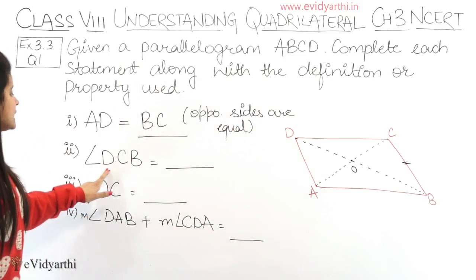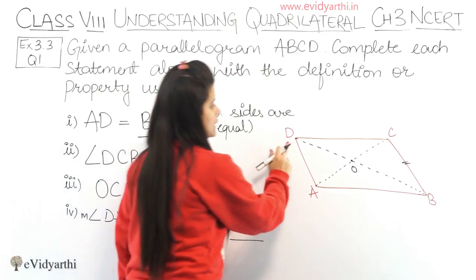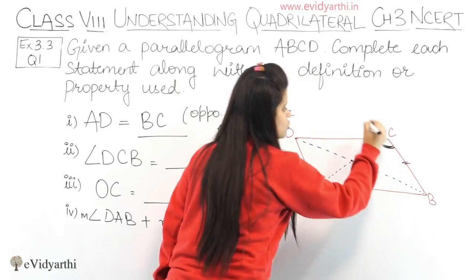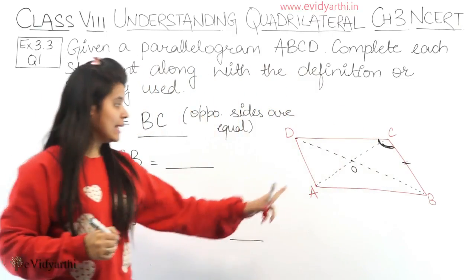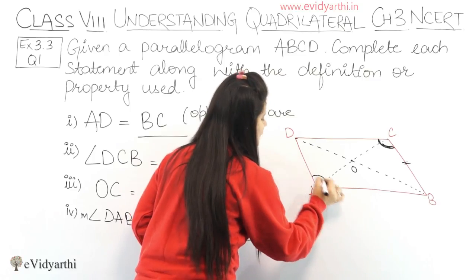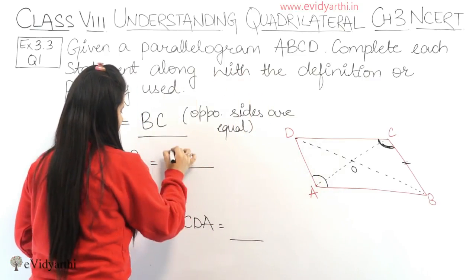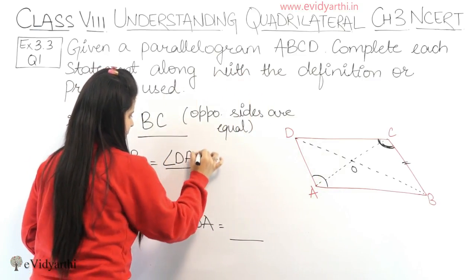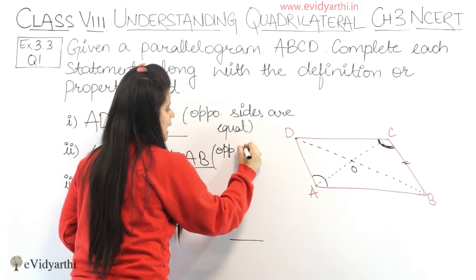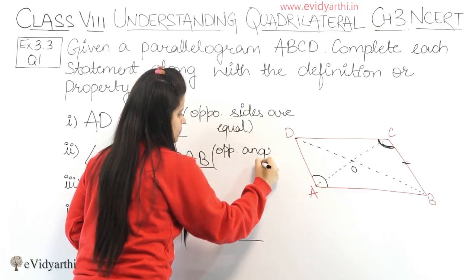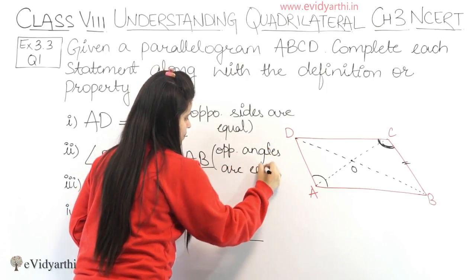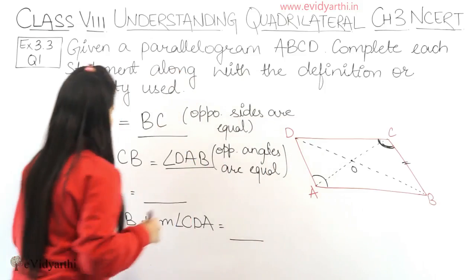Next we have angle DCB. Angle DCB means this full angle, and this angle will be equal to the opposite angle, that is angle DAB. The reason being: in a parallelogram, opposite angles are equal.